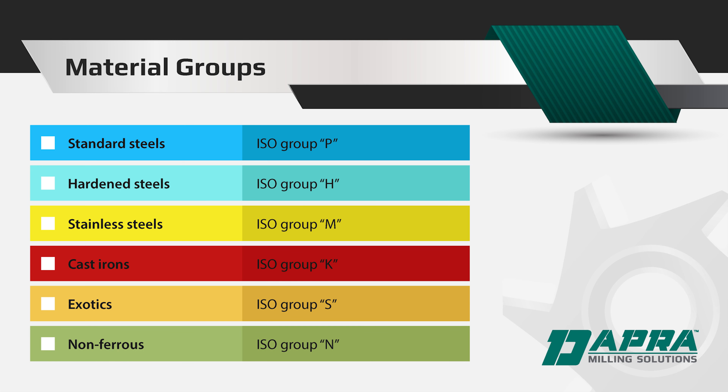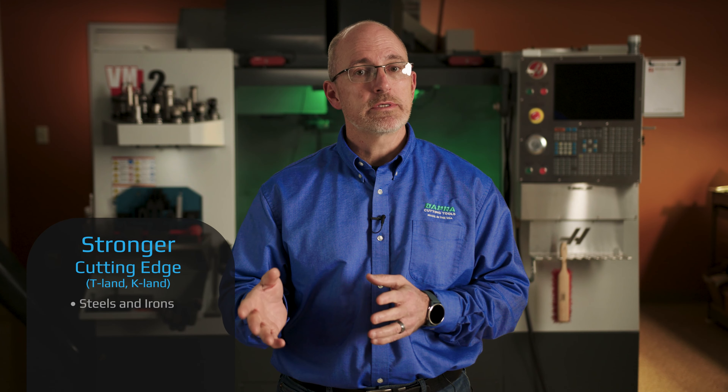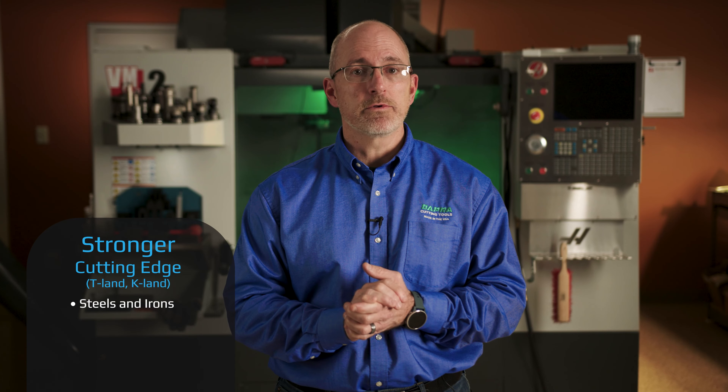Since these materials have very different properties, it only makes sense that they would respond better to specific types of cutting edges. In general, stronger cutting edges are appropriate in steel, hardened steel, and iron, where strength is key and optimum feed rates are possible.